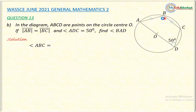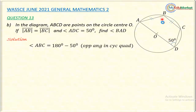Look at this quadrilateral — it is a cyclic quadrilateral because all vertices are on the circumference of the circle. I have angle ADC = 50 degrees, which is opposite to angle ABC. The theorem says opposite angles of a cyclic quadrilateral are supplementary, meaning they add to 180. So angle ABC = 180 minus 50 = 130 degrees.